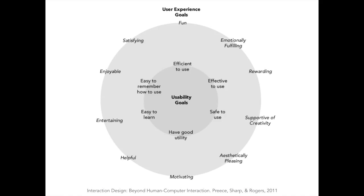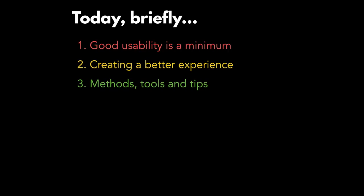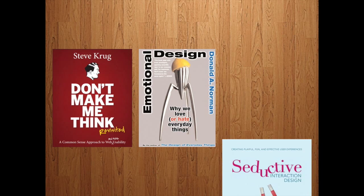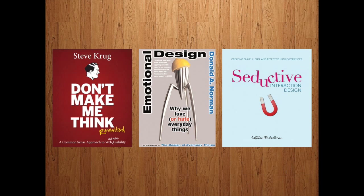That covers looking at usability, looking beyond usability, user experience goals with examples, and ways to get started. This usually fits into a two-hour lecture and we managed to cover it in 45 minutes. I want to suggest three books: Don't Make Me Think by Steve Krug, Emotional Design by Donald Norman, and Seductive Interaction Design. The one thing I want you to take away is to look beyond usability — we should all be creating usable apps, but start thinking about ways to create more memorable experiences by focusing on user experience goals.